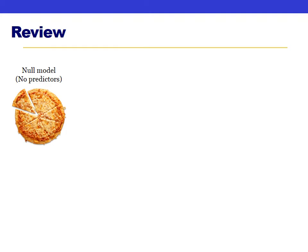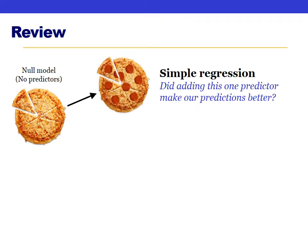First, a quick review of what we've talked about so far this semester. Remember that our null model has no predictors — like a cheese pizza, it has no toppings. So if we were to make a prediction based on no information, our best guess would be that everyone's score is exactly average. For the first few weeks we talked about simple regression, where we add one predictor — one topping — to see if adding that predictor made our predictions better.